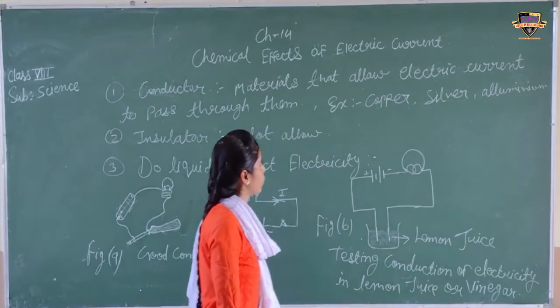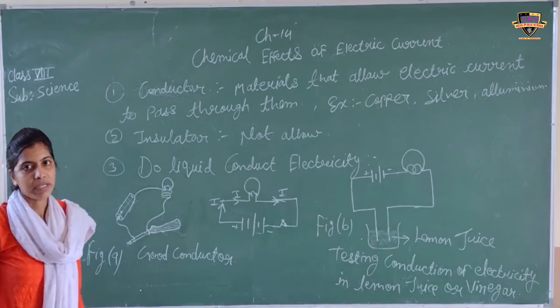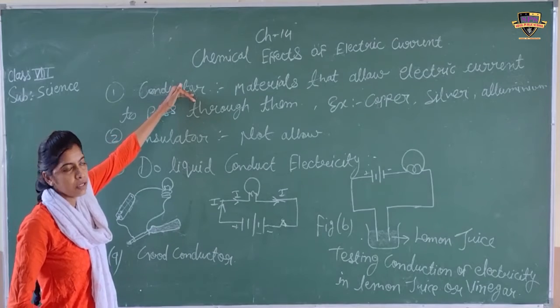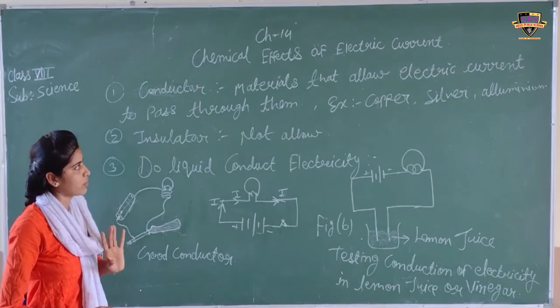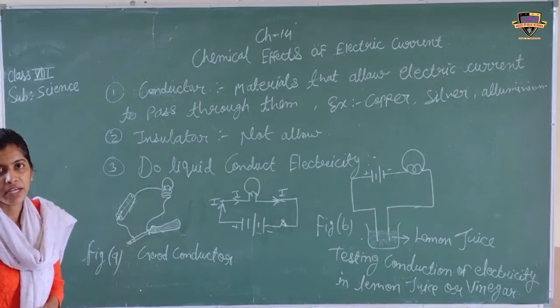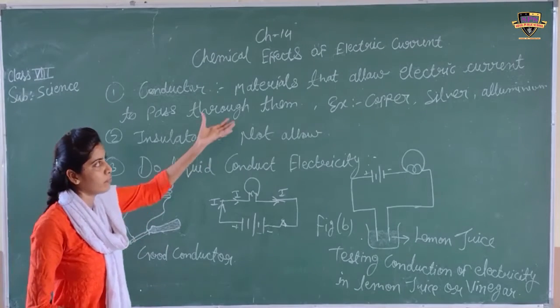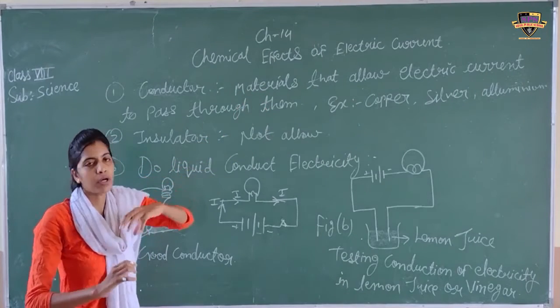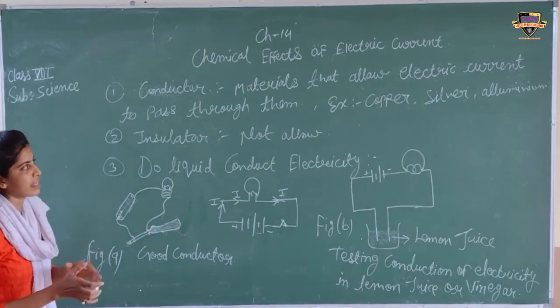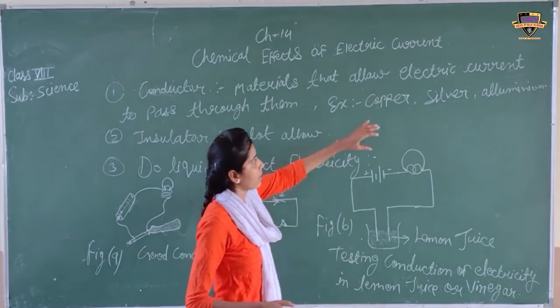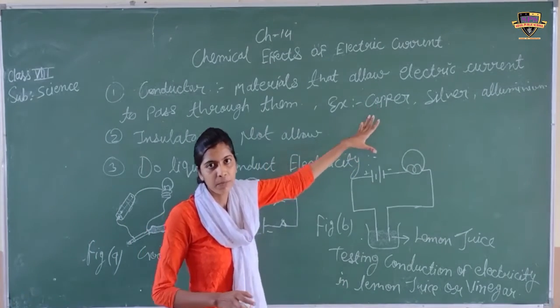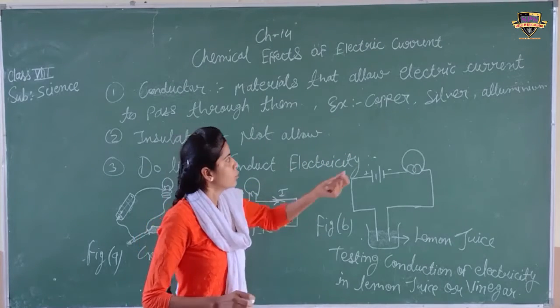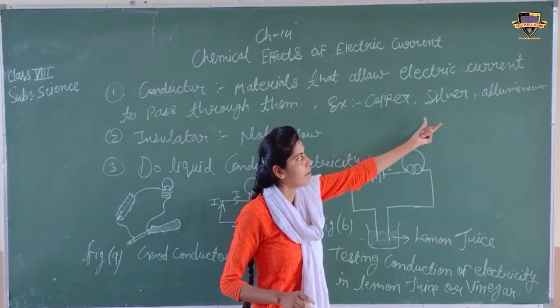In the wires, we call them conductors. They are easily allowing current to flow. So if you have a wire, the wire is a good conductor. You can see copper and silver wires are very important conductors.